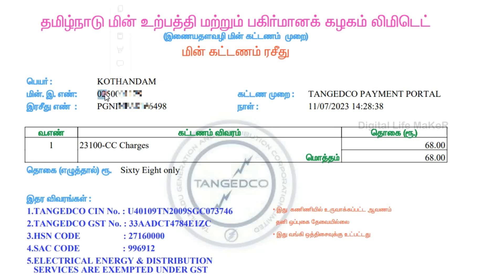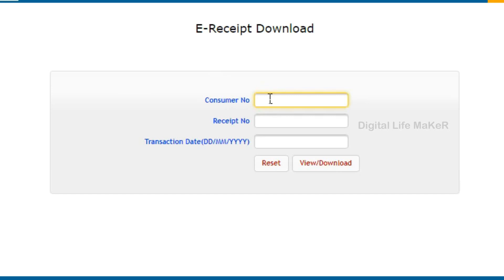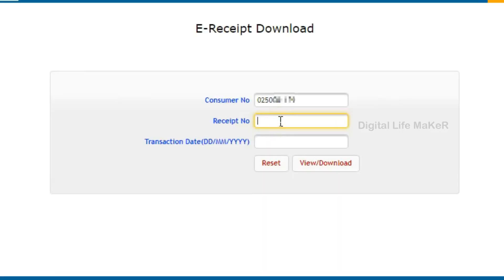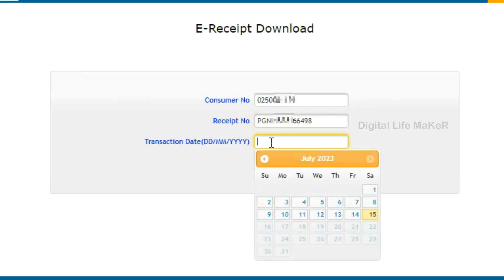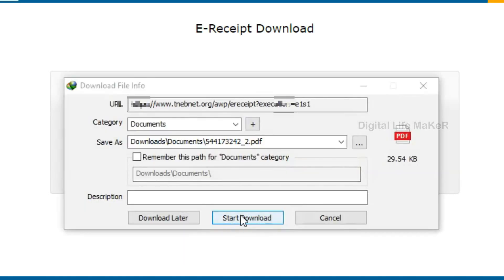Check the EB number. If you call your EB number, copy the EB number and enter it. Don't type on the first page. Enter the transaction date, then click on download and start the download.